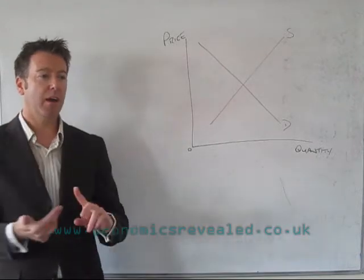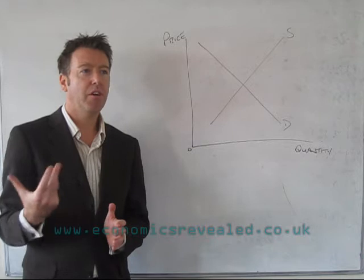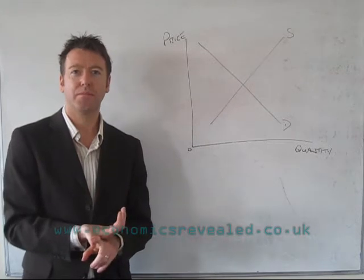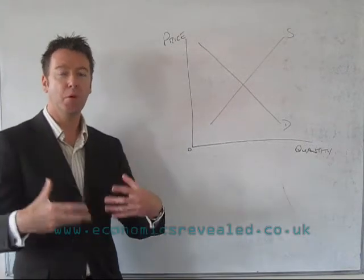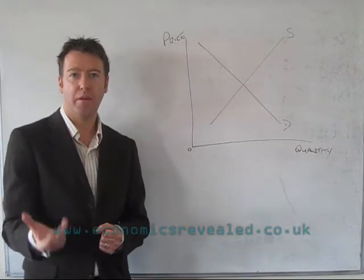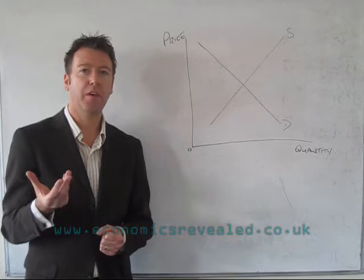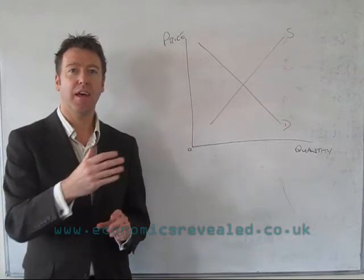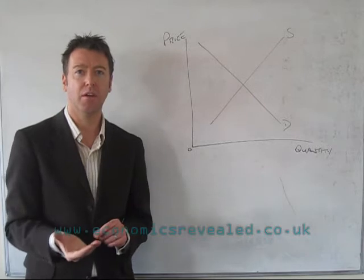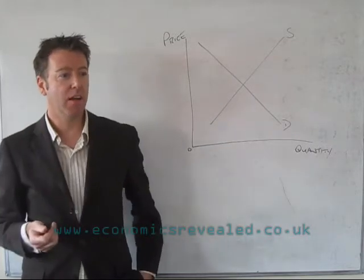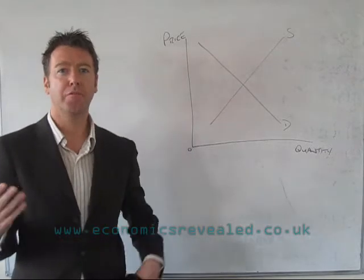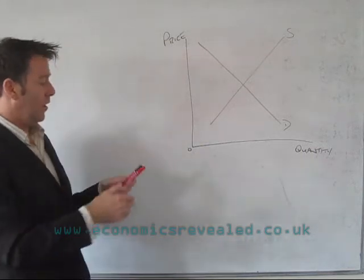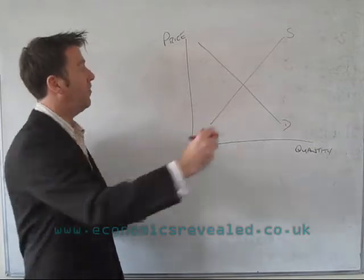Now imagine a situation where a condition of demand changes. Examples of a condition of demand might be an increase in population — if there's an increase in population, there are more people demanding at every single price level. If a specific company increases its advertising, there is an increase in demand at every single price level. Or alternatively, there's an increase in consumer income — if people's income goes up, they tend to demand more at every single price level. So in that situation, the demand curve shifts to the right.